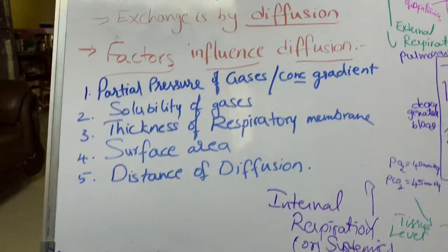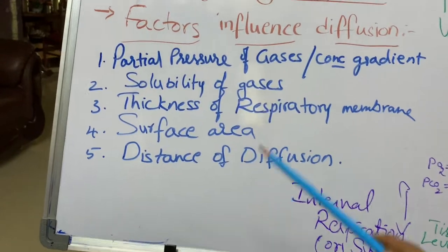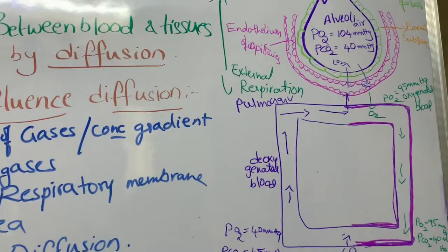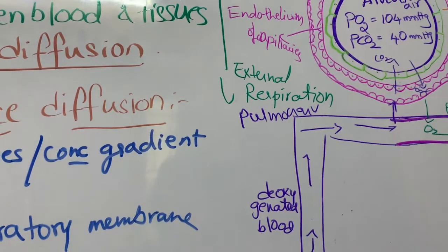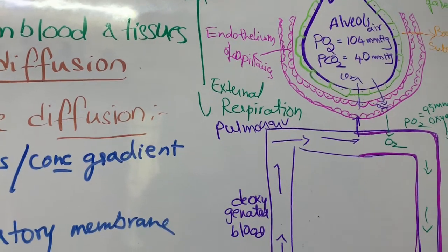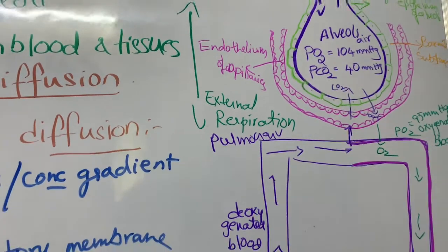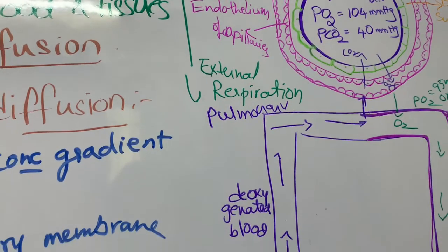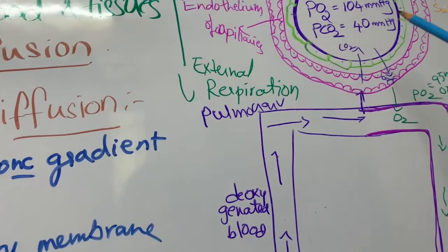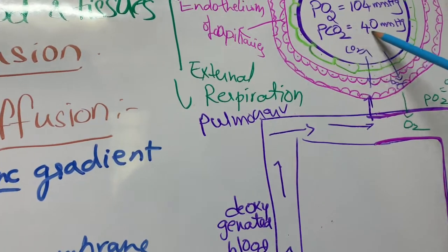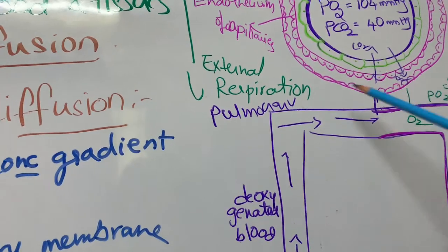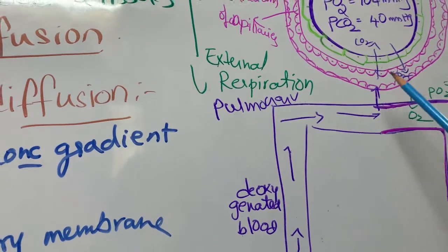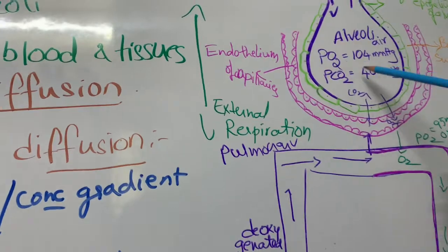The next factor affecting diffusion is the solubility of gases. Carbon dioxide is 20 to 25 times more soluble than oxygen. That is why carbon dioxide easily diffuses from blood into the alveolar sac — even though its partial pressure difference is less, its high solubility enables it to diffuse efficiently and be removed from the blood.